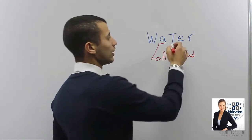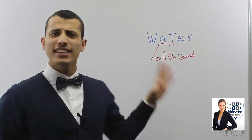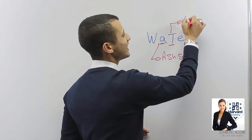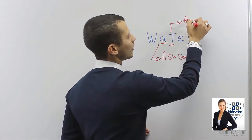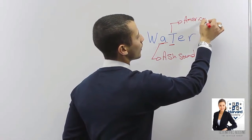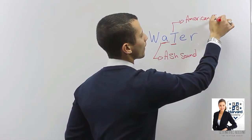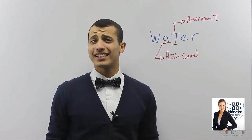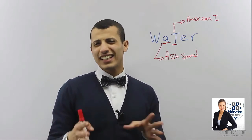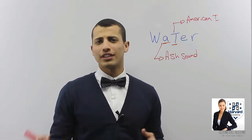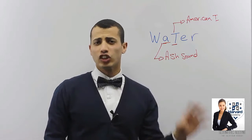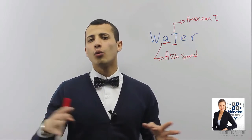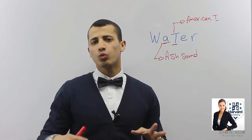The second rule is this T — it's called the American T. How do we pronounce the American T? It's not actually a hard 'T,' it's a light 'T.' We pronounce it as a light 'D' sound, so we say 'da.' So we say 'wa-da,' not 'water.'